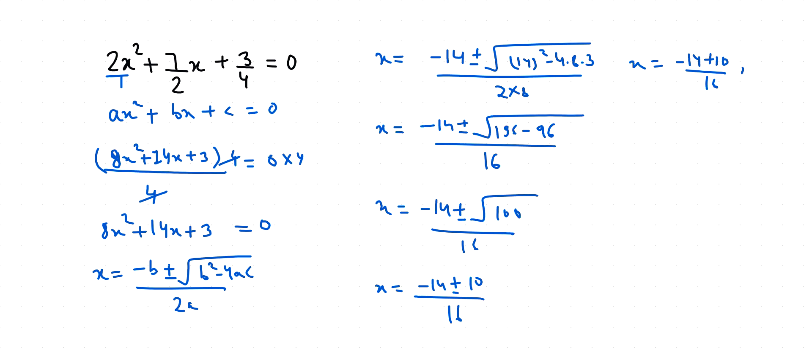So x₁ is -4/16, that is -1/4, and x₂ is -24/16. If we divide by 8 both numerator and denominator, it's -3/2. I hope it's clear and you find it useful.